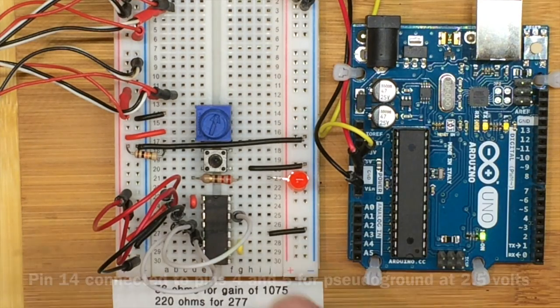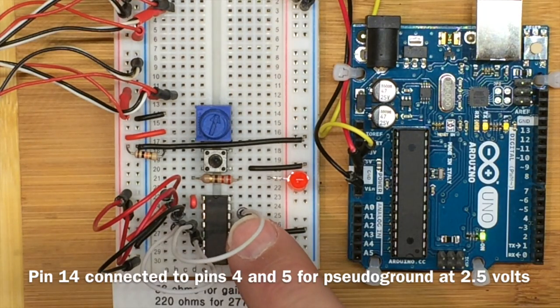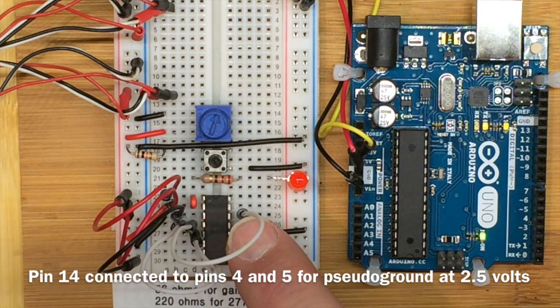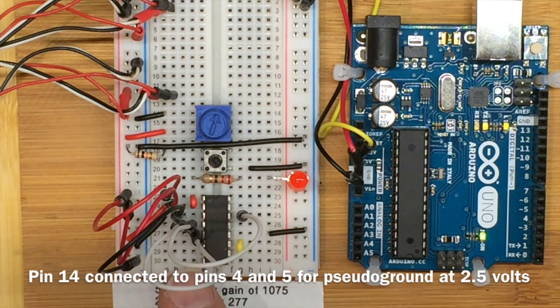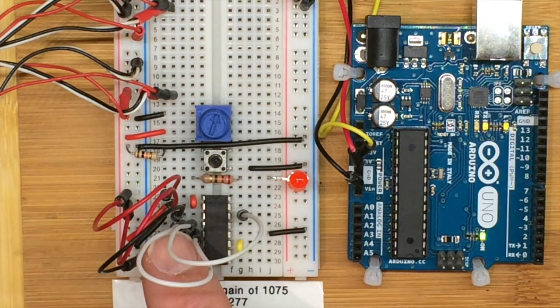For pseudo-ground operation, we get a 2.5-volt reference from pin 14. We have to connect that over through this white wire to pin 5 and to pin 4 on the other side of the amplifier.